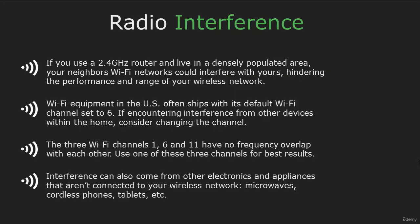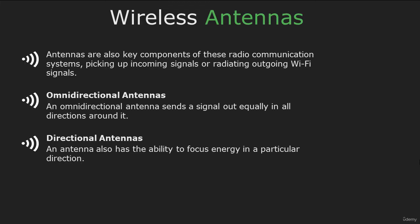The last topic I want to cover in this video is wireless antennas. Antennas are key components of these radio communication systems. There are two types: omnidirectional and directional. An omnidirectional antenna sends a signal out equally in all directions, and a directional antenna sends a signal out in one direction.